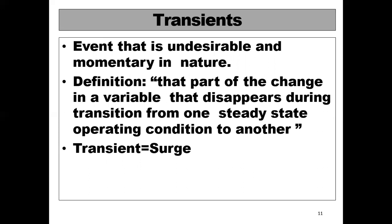In a sub-period — between two steady-state operating conditions — a sudden sub-variation or disappearance occurs in a variable such as voltage or current. This transient variation is called a transient. A transient is also called a surge.